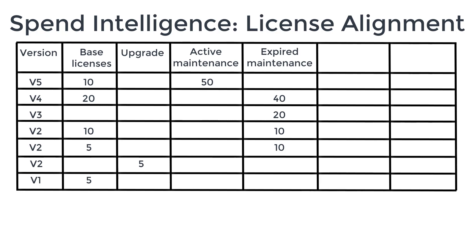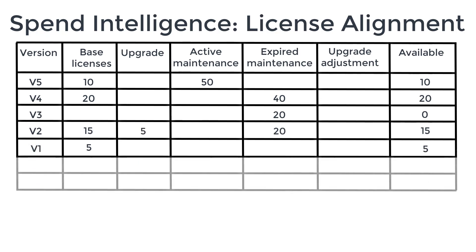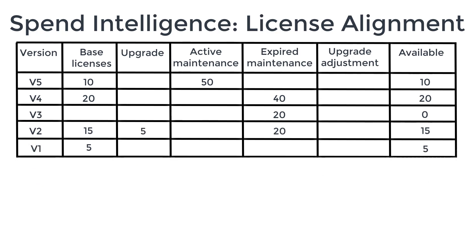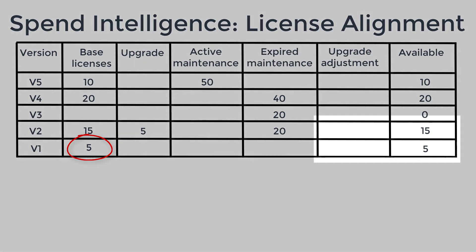The data grid in Ivanti Neurons for Spend Intelligence includes some extra columns: upgrade adjustment and available. The available column shows you how many licenses you have available for that version based on the number of base licenses you bought for that version, and any rows for different transactions but for exactly the same software are combined into the same row. Starting at the bottom, we can see that the five V2 upgrade licenses mean we can use our five V1 base licenses for V2, so we add an adjustment of plus 5 to the V2 row and subtract 5 from the V1 row.